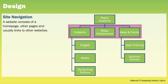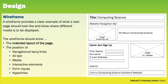Once we've designed the structure of the website we can then move on to designing the structure of individual pages. A wireframe provides a clear example of what a web page should look like and shows where different media is to be displayed. The wireframe should show the intended layout of the page and the position of navigational bars and links, all text, media, interactive elements, any form inputs and type links.